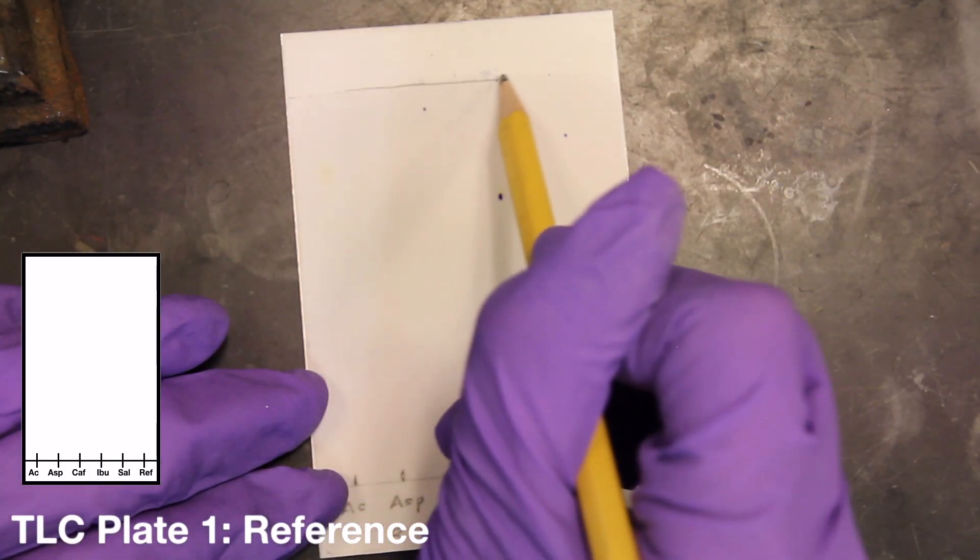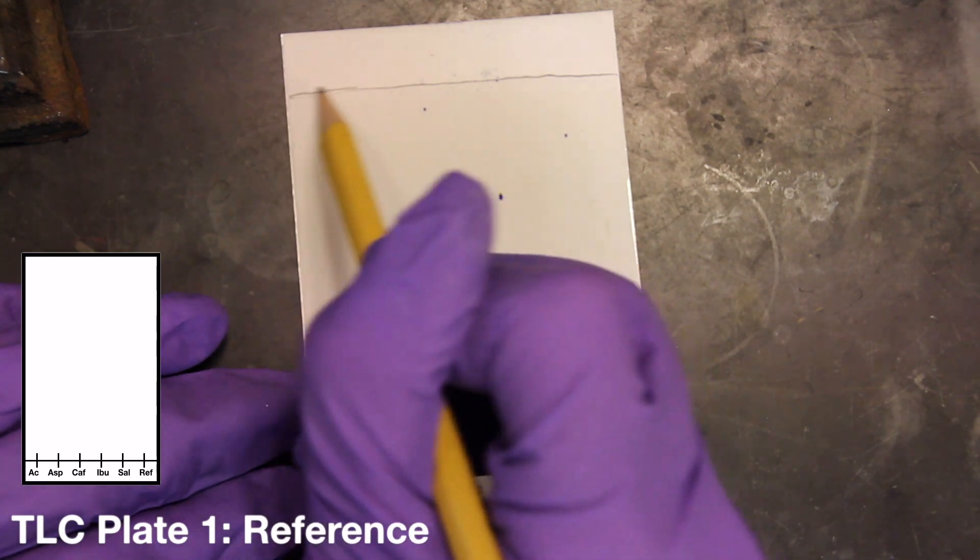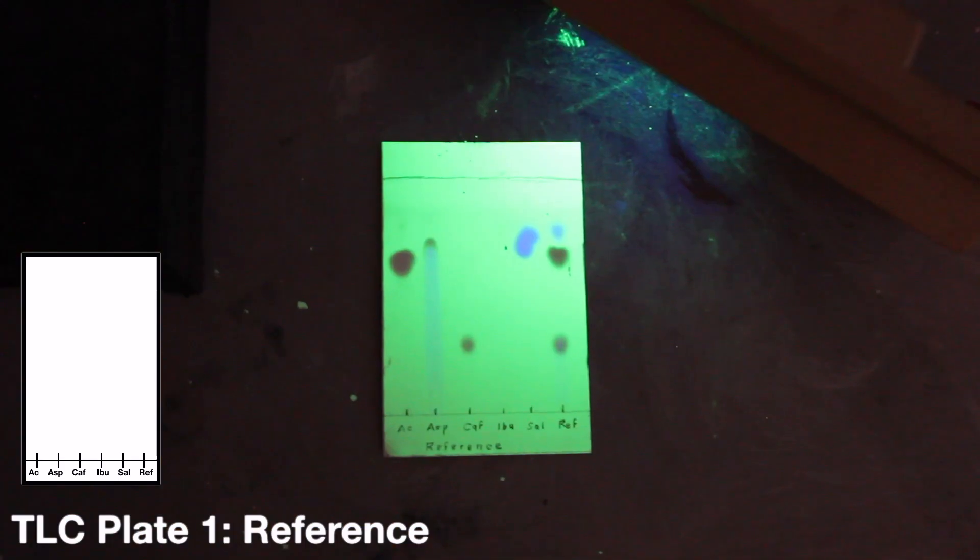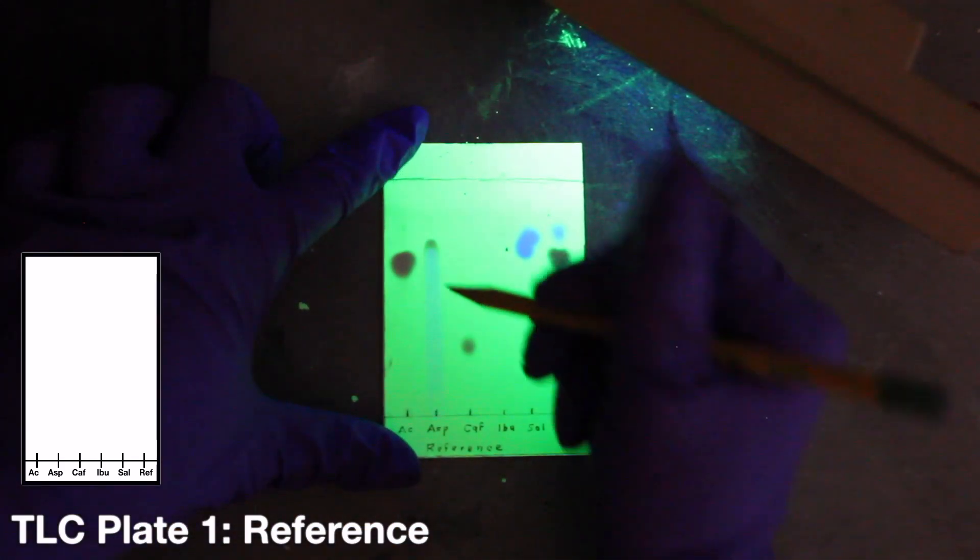Next, allow a few minutes for the plate to dry. After your plate has dried, observe it under a short wavelength UV lamp at the station set up in the lab prep room. Lightly outline all of the observed spots with pencil.